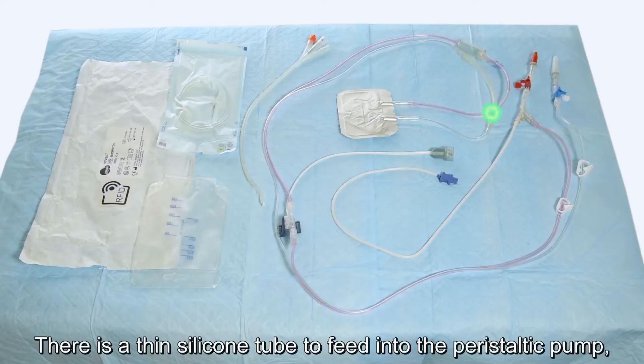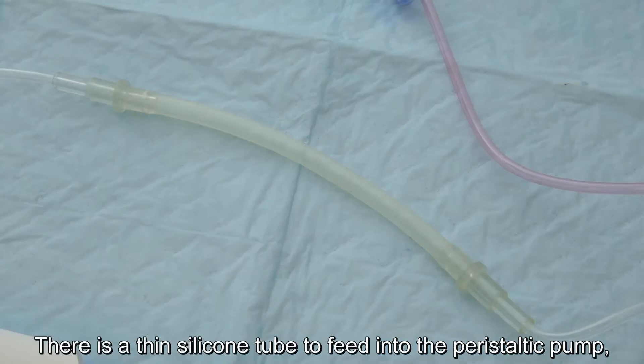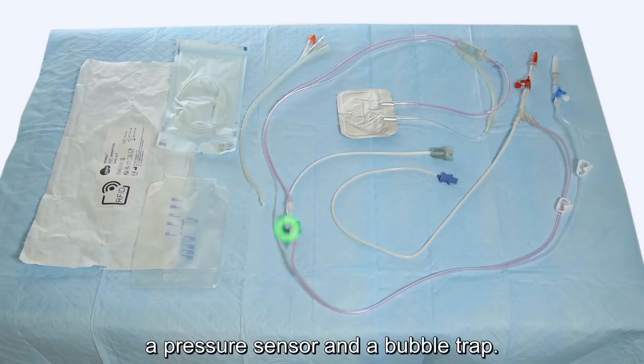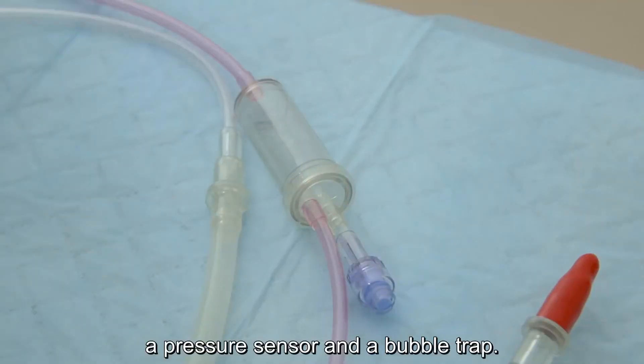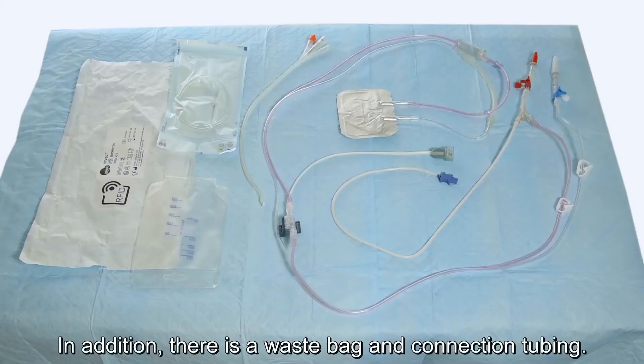There is a thin silicon tube to feed into the peristaltic pump, a pressure sensor and a bubble trap. In addition there is a waste bag and connection tubing.